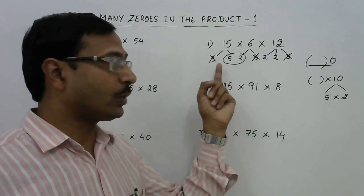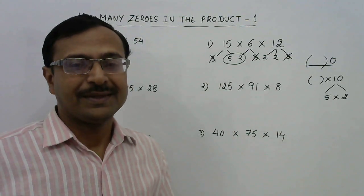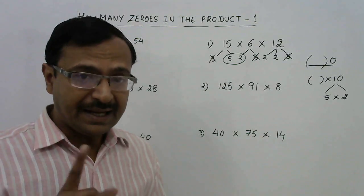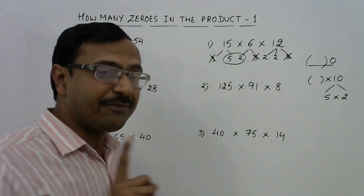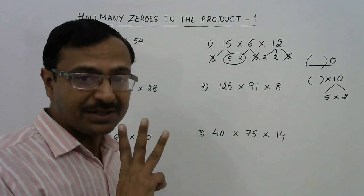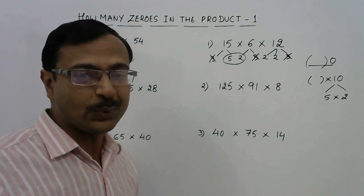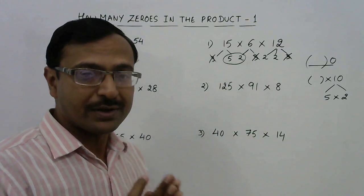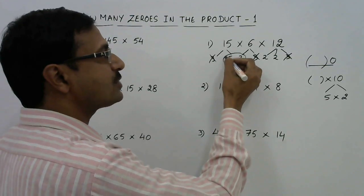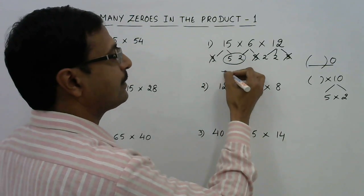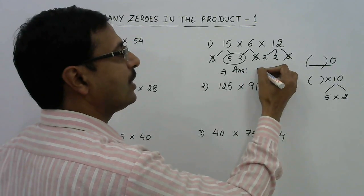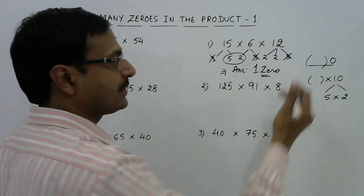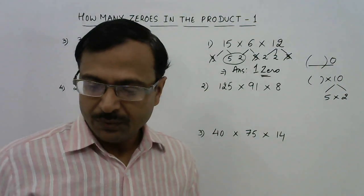We have more twos but only one five here. So just count the number of twos and the number of fives, and take the lesser one. We have only one five but three twos, so there will be only one zero in the product, because 5 × 2 = 10, but 2 × 2 = 4 — it does not result in a 10. Only one pair of 5 and 2 means the answer is one zero.